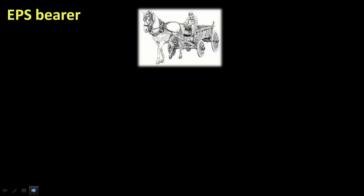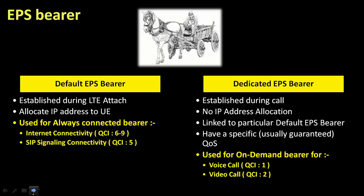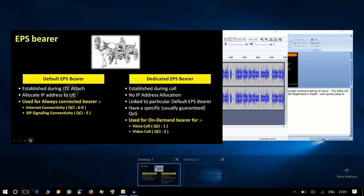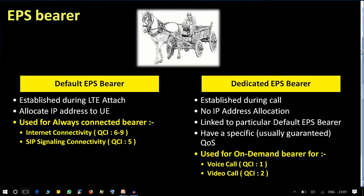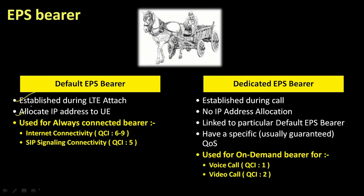Let's discuss the role of EPS bearers. A bearer in dictionary terms means a carrier that carries something from point A to point B. In communication technology, a bearer is a pipeline connecting two or more points through which data traffic flows. The default EPS bearer is established during LTE attach itself and always allocates an IP address to the user. It is used for always-connected services such as internet connectivity with QCI 6 to 9, and also for SIP signaling connectivity for VoLTE signaling using QCI 5.